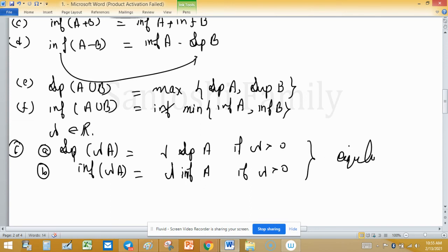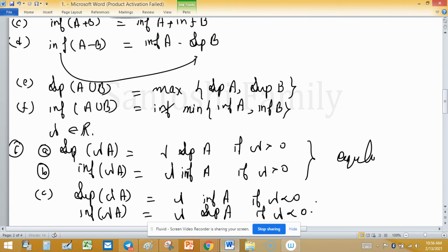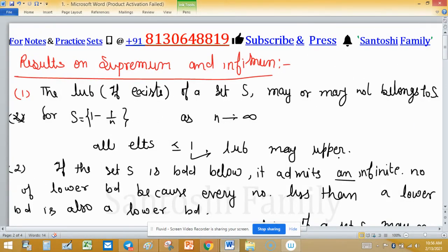It is just like inequality. If we multiply by negative, it turns the sign of inequality. If lambda is less than 0, then supremum of lambda A will be lambda times infimum of A. These are some useful results about supremum and infimum and we must know about these.